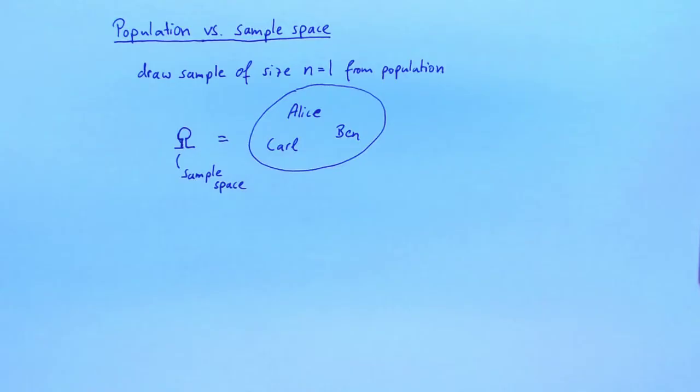The set of all possible samples is the sample space. To describe, for example, the exam score of the randomly sampled student, we can use a random variable. Let's call this random variable Y. For each possible sample small omega, Y gives the exam score of the one student that we sampled. For example, if we sample Alice, then Y of the sample Alice will be 86.